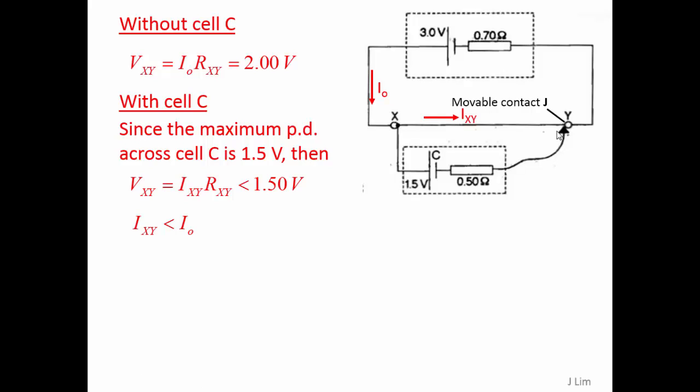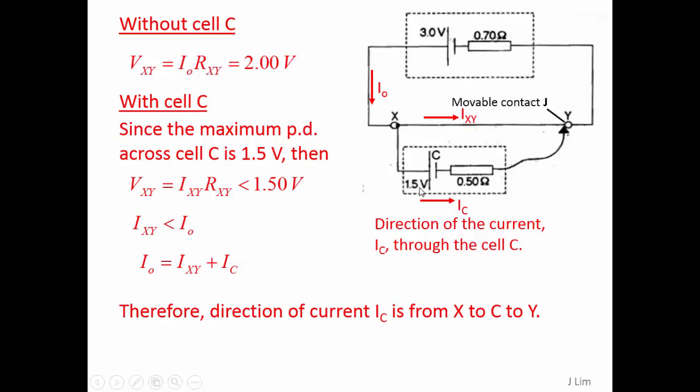Hence, the current through XY must be less than the current through the battery, and the current through cell C must flow from X to C to Y.